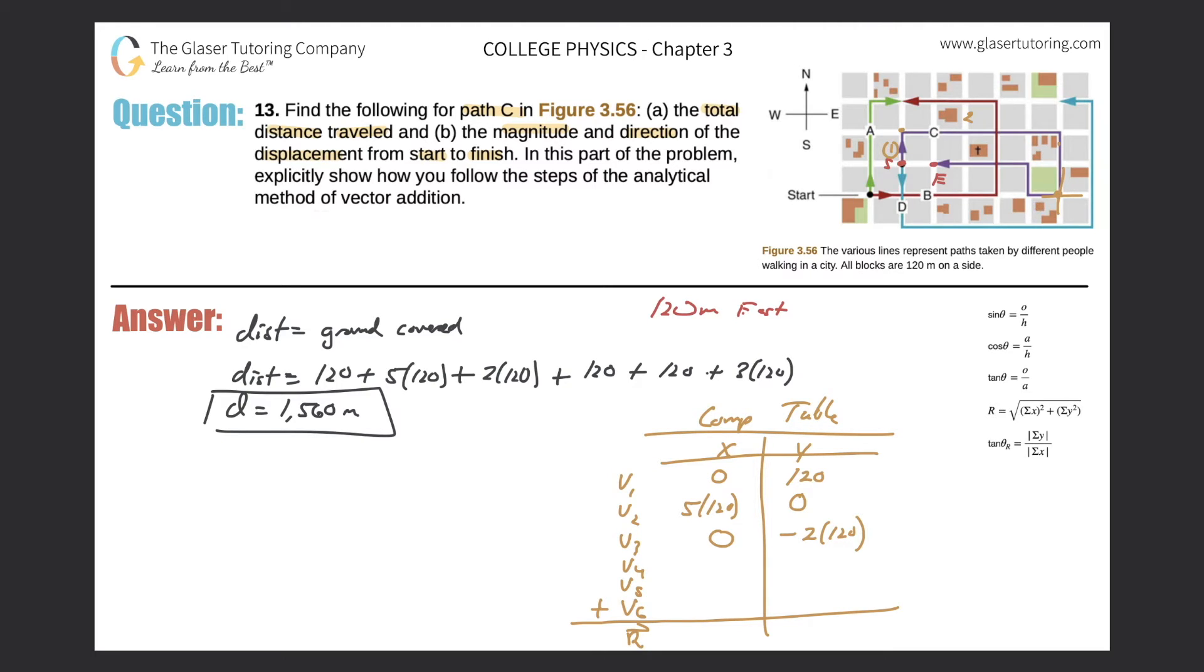So that's a negative 120 for the x value, and there is no y value to this vector right here. So what that means is that the y value there is zero. Great, now let's go to the start of the next one.